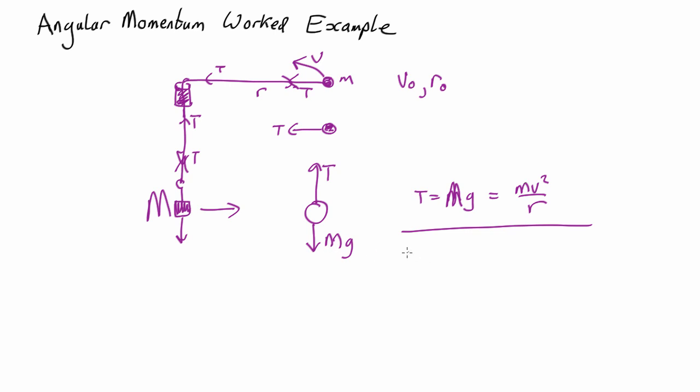For that we're going to need another equation, because we've got two unknowns here. We want to know both the velocity and the radius where it evens out.